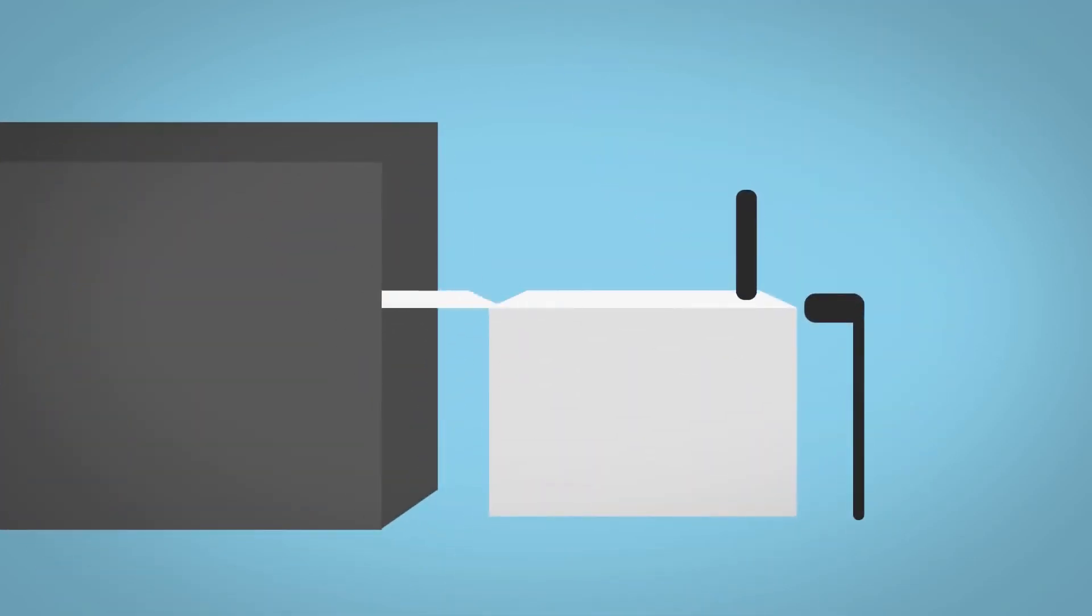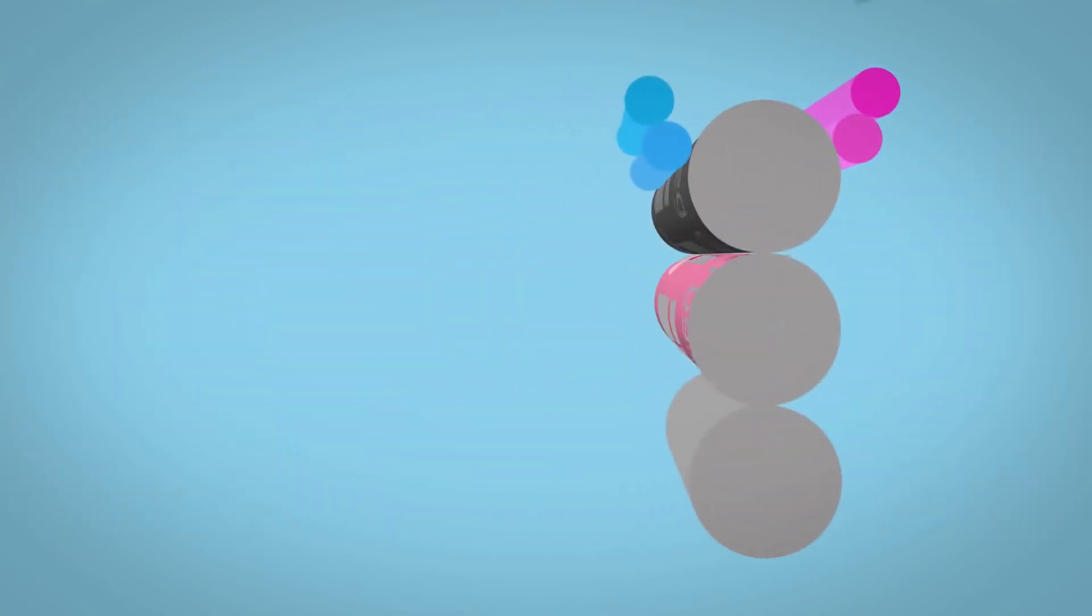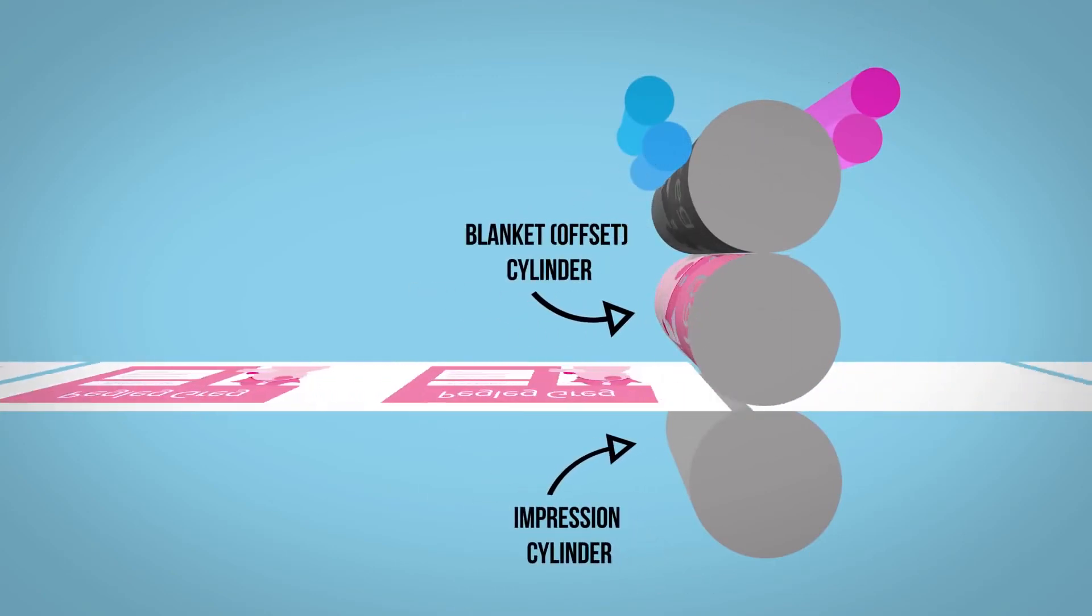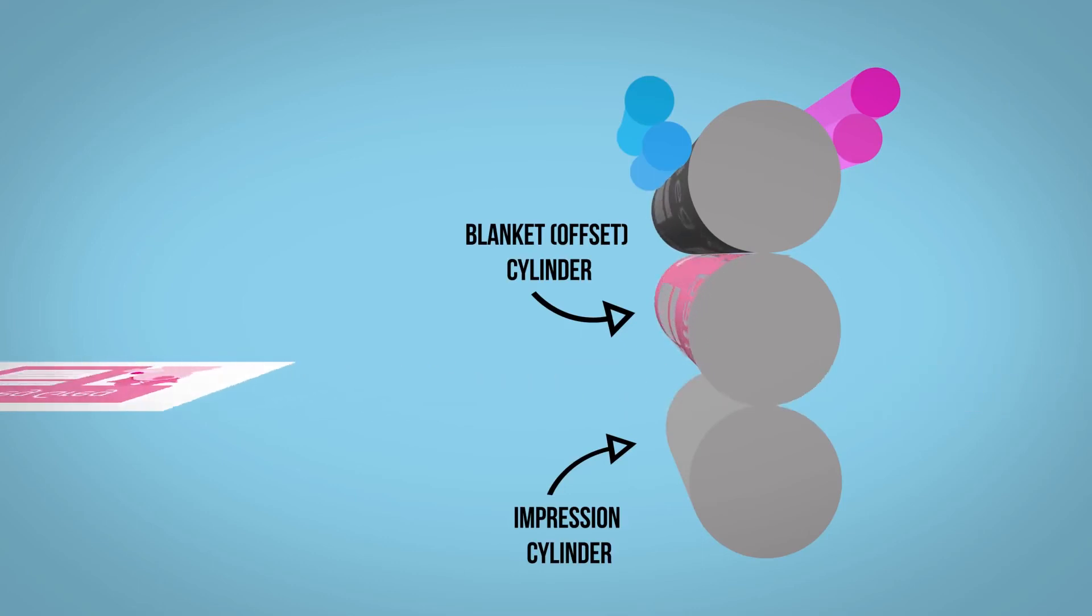Paper is loaded into the start of the press, and is separated by jets of air to ensure that only one piece travels at a time. The paper is passed between the blanket cylinder and the impression cylinder, where it receives the printed image before it's passed on to the next unit to receive the next colour.